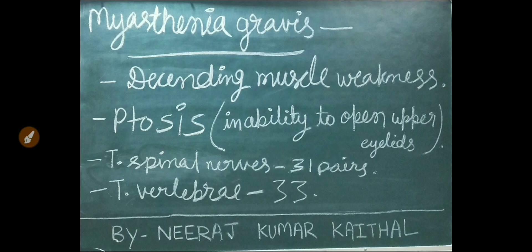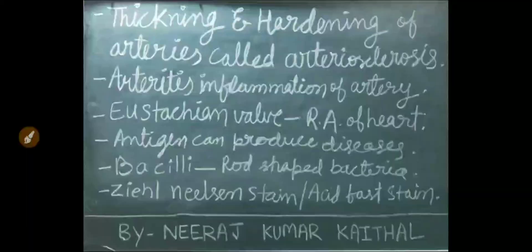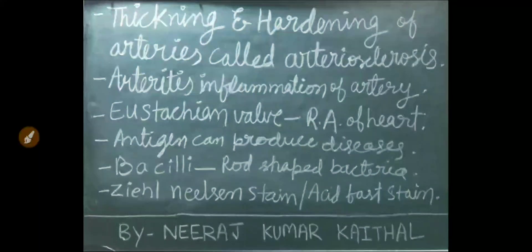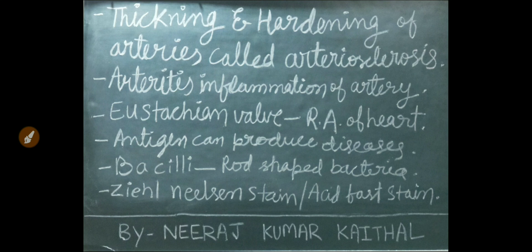Total spinal nerves are 31 pairs. Total vertebrae are 33. Thickening and hardening of arteries is called arteriosclerosis. Arteritis is the inflammation of artery. Eustachian valve is found in the right atrium of the heart. Antigen can produce diseases. Bacillus is a rod-shaped bacteria. Ziehl-Neelsen stain is also known as acid-fast stain.